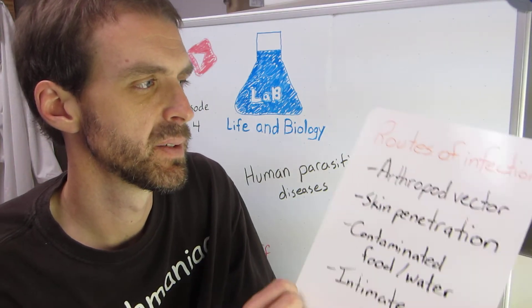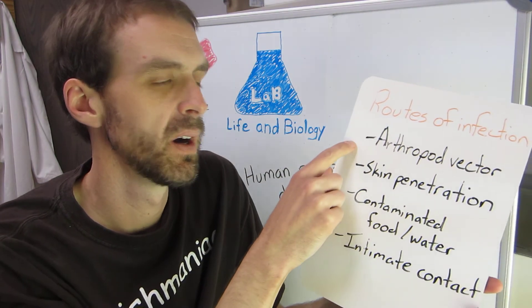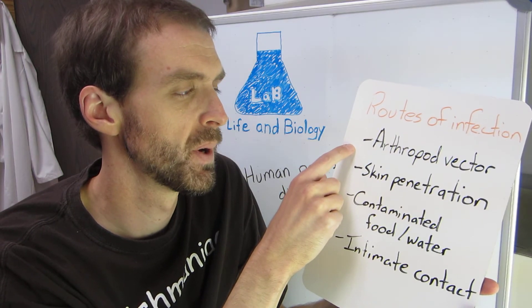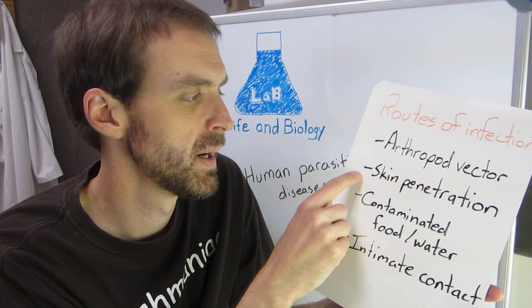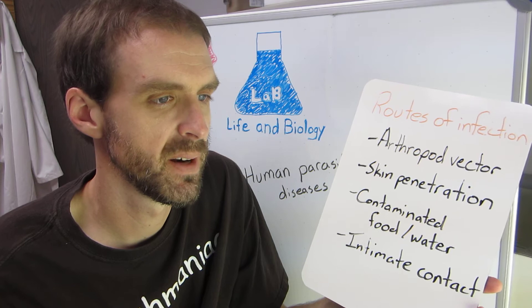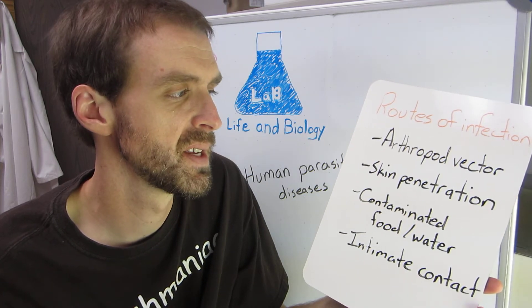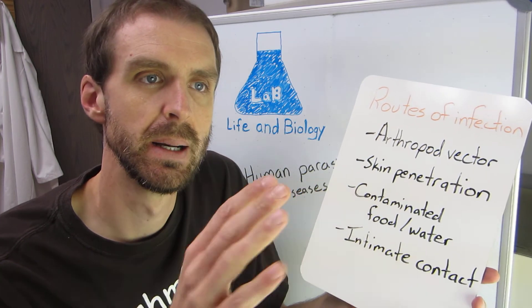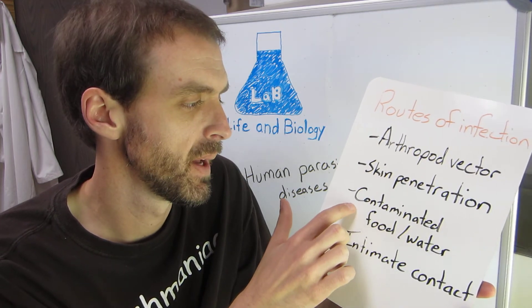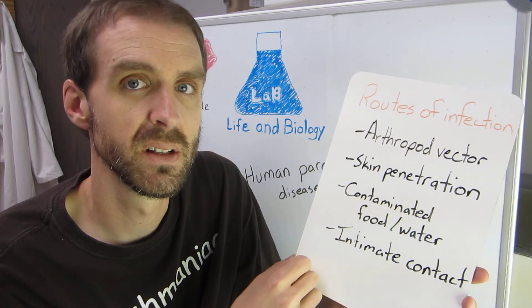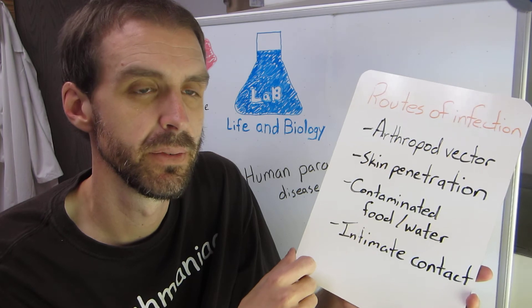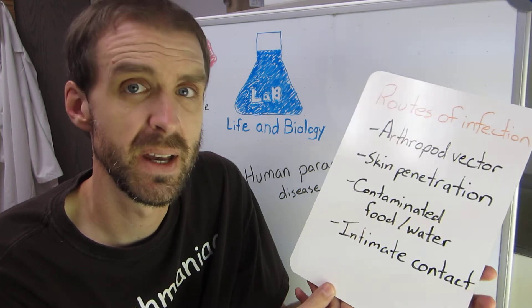How can you get parasites? The four main routes of infection are: first, arthropods acting as vectors, transmitting them from person to person or animal to person. Second, skin penetration — parasites can be in water, and if you enter that water they can attach and enter your skin, or they can sit on blades of grass and enter through bare feet. Third, contaminated food and water — drinking or eating not-so-clean food or water. And fourth, intimate contact — there's at least one parasite that's transmitted as an STD.